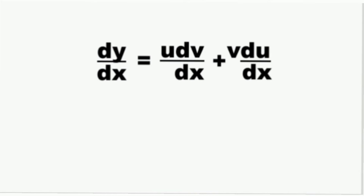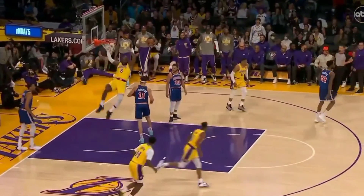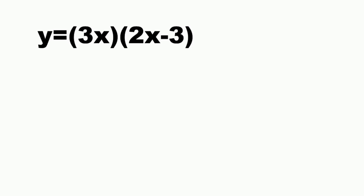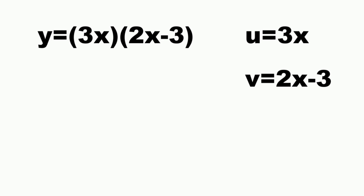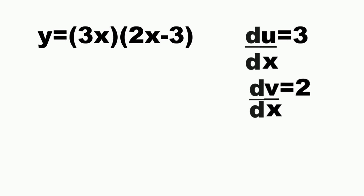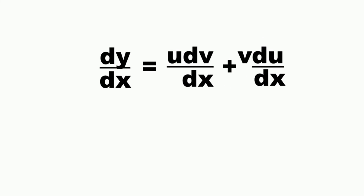This is the product rule of differentiation. Example: 3x times the quantity 2x minus 3. Apparently u is 3x and v is 2x minus 3, so du over dx is 3 and dv over dx is 2. Using the product rule, dy over dx equals u dv over dx plus v du over dx.